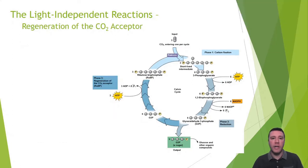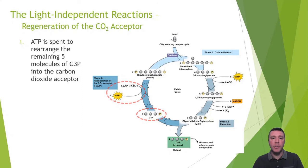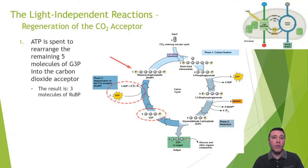The final stage of the Calvin cycle, and unarguably the most complex, is regeneration of the CO2 acceptor, RuBP. This stage utilizes more ATP from the light reactions to rearrange the five G3P molecules into three molecules of RuBP, and now the Calvin cycle may continue. It is important to note that although the Calvin cycle does not require light, it does require products from the light reactions. Without light, there would be no ATP or NADPH formed, resulting in the Calvin cycle stopping right after carbon fixation, since the reduction and regeneration stages wouldn't be possible.